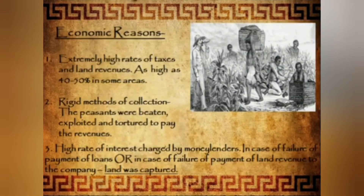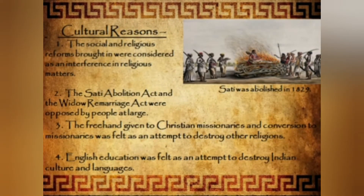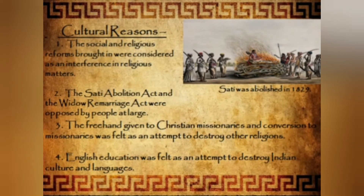Coming to the social and religious causes: a large section of the population was alarmed by the rapid spread of Western civilization in India. An Act in 1850 changed the Hindu law of inheritance, enabling a Hindu who had converted to Christianity to inherit his ancestral properties. Missionaries were allowed to make conversions to Christianity all over India, and people became convinced that the government was planning to convert Indians to Christianity. The abolition of practices like sati and female infanticide, and legislation legalizing widow remarriages, were seen as threats to the established social structure. Even the introduction of railways and telegraphs was viewed with suspicion.